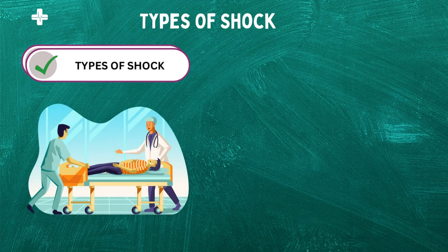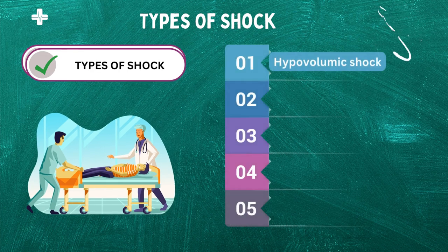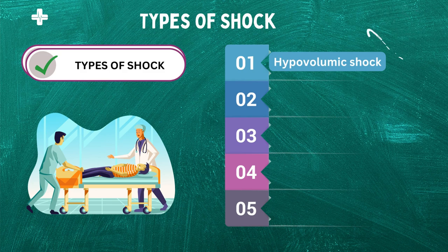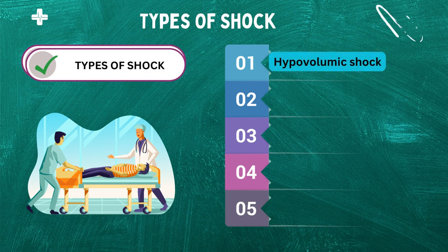To understand the management of shock in an intensive care unit, we need to identify which type of shock it is to get a definitive approach. Let's dive in and learn about the various types of shock and their causes. First, hypovolemic shock. This type of shock occurs when there is a significant loss of blood or fluid in the body. This can be caused by severe bleeding, dehydration, or excessive sweating. The decrease in blood volume leads to a decrease in blood pressure and inadequate blood flow to the body's organs and tissues.